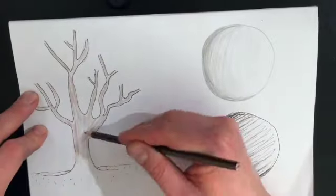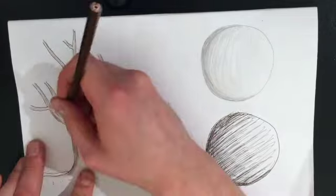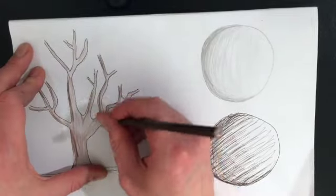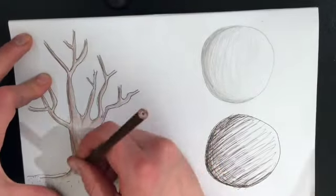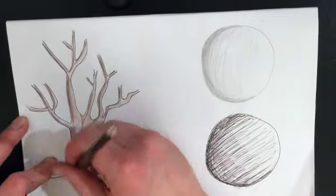And then if we imagine the sun is coming from the right, the left hand side will be a bit darker. So I'm just going to use a bit more pressure to make this side darker.